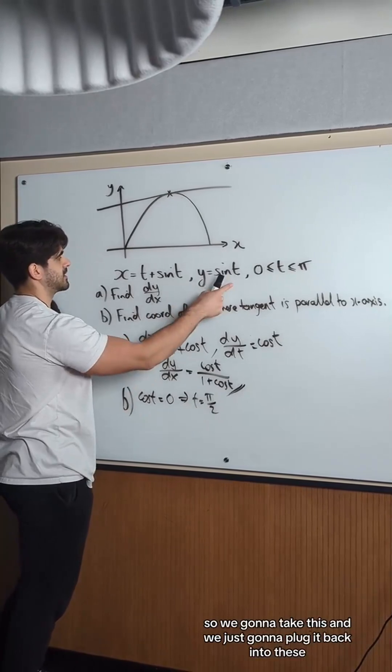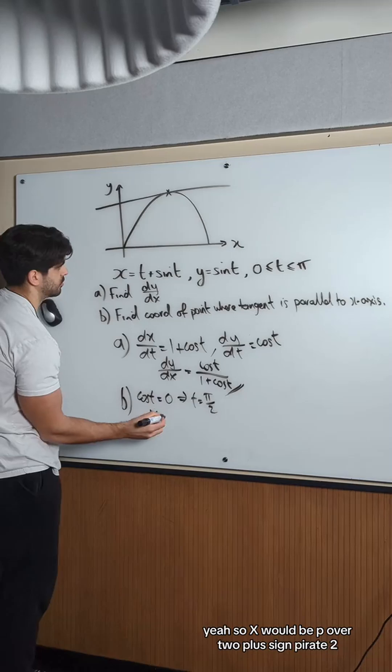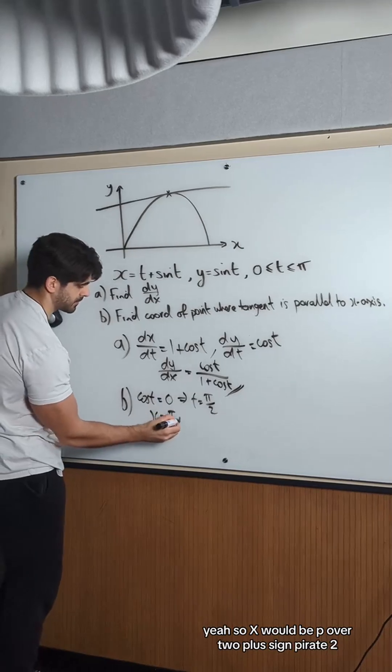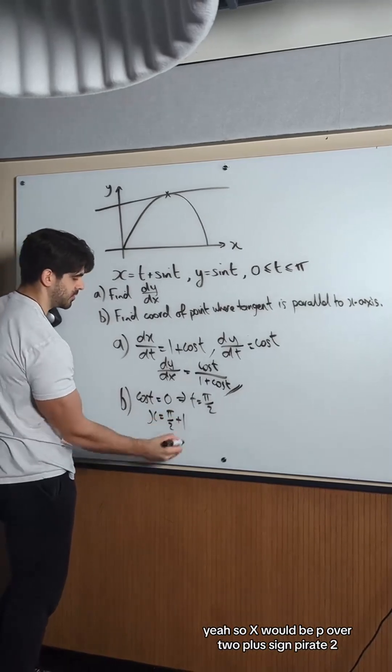And we're just going to plug it back into these. So x would be pi over 2 plus sin pi over 2, which is 1.